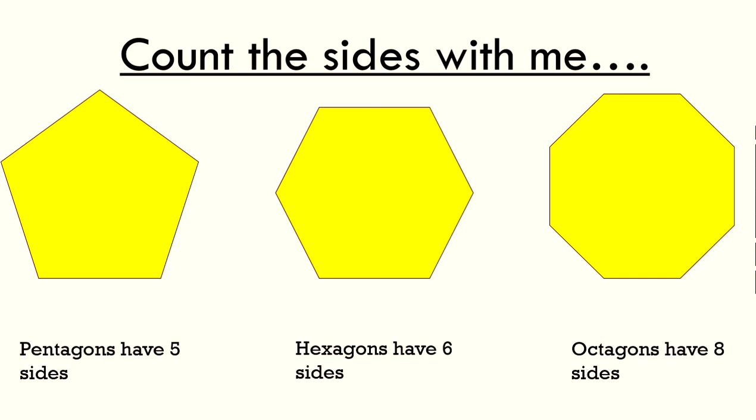A hexagon has six sides, that's it. An octagon has eight sides. Well done, shape superstars.